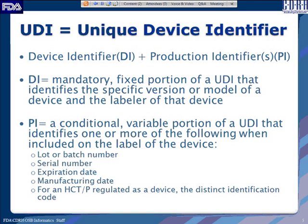So what is a UDI? A UDI stands for Unique Device Identifier. It is composed of a Device Identifier (DI) portion and a Production Identifier (PI) portion. The DI is the mandatory, fixed, static portion that identifies a specific version or model of the device and the labeler. The PI is a variable portion and may be composed of any of five items: lot or batch number, serial number, expiration date, manufacturing date, and for human cellular and tissue-based products, the distinct identification code.